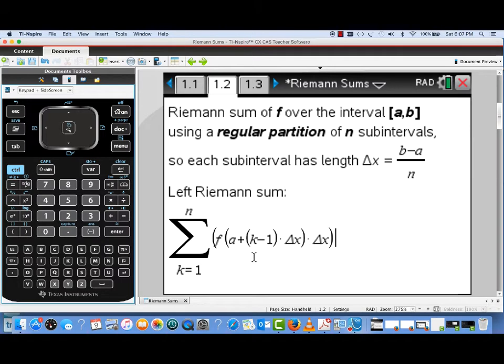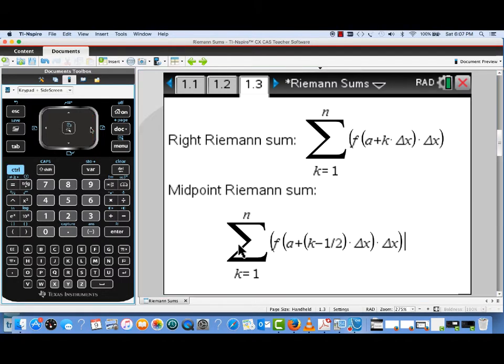And what we have here is the Riemann sum we would get by choosing the left endpoint of each interval. For each point in each subinterval, we evaluate the function at that point and then multiply by the length of the subinterval and add all the results together.